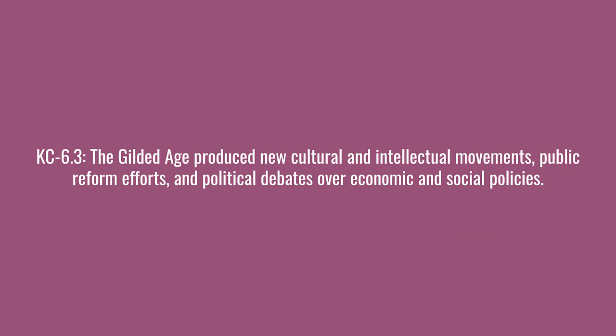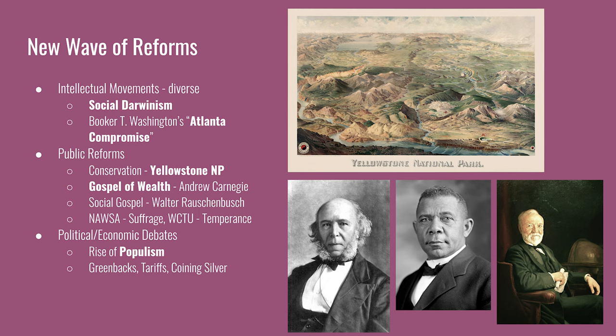The next key concept says the Gilded Age produced new cultural and intellectual movements, public reform efforts, and political debates over economic and social policies. Social Darwinism, developed by Herbert Spencer, took ideas from Charles Darwin's theory of evolution and applied them to humans and society—the phrase 'survival of the fittest' originates here. It was often used to justify discrimination, nativist policies, or opposing public assistance. Booker T. Washington proposed a pragmatic approach to civil rights in his Atlanta Compromise speech, asking African Americans to accept discrimination and focus on economic mobility through trade education. The founding of the Tuskegee Institute provided such opportunities, and because his message excused racist policies, Washington was accepted by white politicians and reformers.